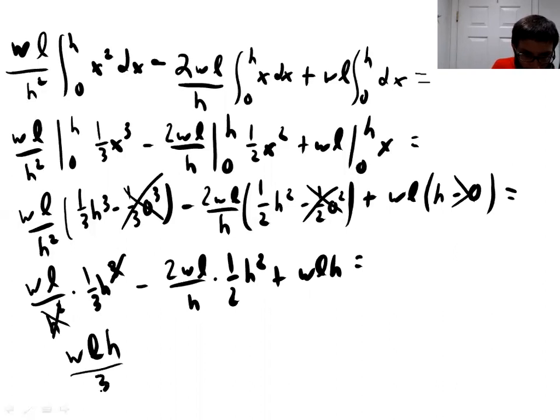And then this other term here, we have an H squared. We have a 2 on the bottom and a 2 on top. Those are going to cancel. And this H squared is going to cancel with this H on the bottom. So we're going to get minus WLH plus WLH. And so those two terms are going to cancel.